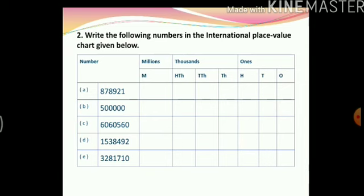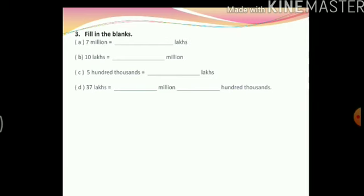Write the following numbers in the international place value chart. This is similar to question 1, but here you use the international place value chart. Always start from the right hand corner. So for the number 878921: 1 will go in the ones place, 2 in the tens place, 9 in the hundreds place, 8 in the thousands place, 7 in the ten thousands place, and 8 in the hundred thousands place. Please complete the rest of the questions also.